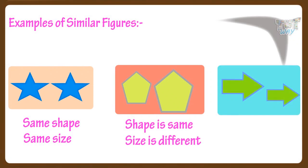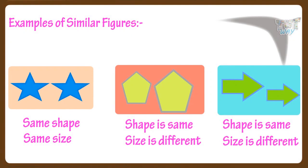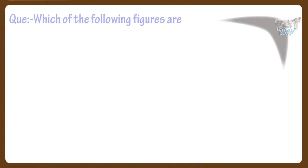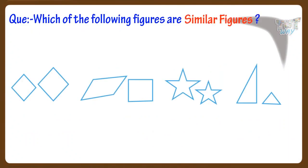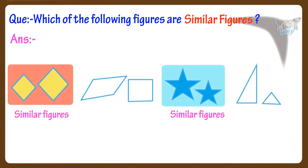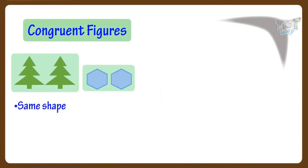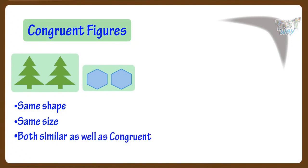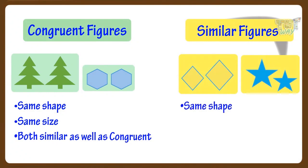In case of these arrows, shape is the same, so these are similar figures, although their size is different. So figures with the same shape are similar — their size can be the same or different. Which of the following figures are similar? These figures are similar as they have the same shape. Remember, if figures have both the same shape and size, they are both similar and congruent. All congruent figures are similar, but not all similar figures are congruent, as they may or may not have the same size.